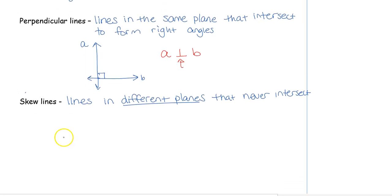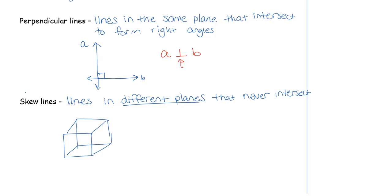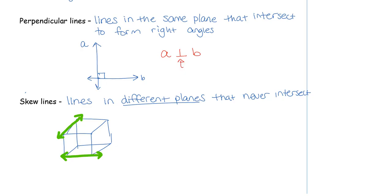To show skew lines, I have to draw a three-dimensional picture. The easiest way is to draw a cube: draw one square, draw an overlapping square, and connect all the corners. They are in different planes, which is why I need a 3D picture. I'll pick two lines on different planes that don't go the same direction — notice one goes front to back and one goes side to side. Because they're in different planes, they'll never intersect, but since they don't go the same direction, they're not parallel.